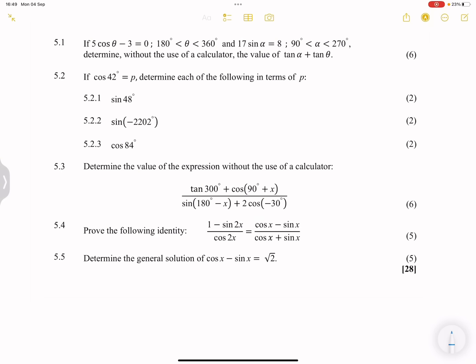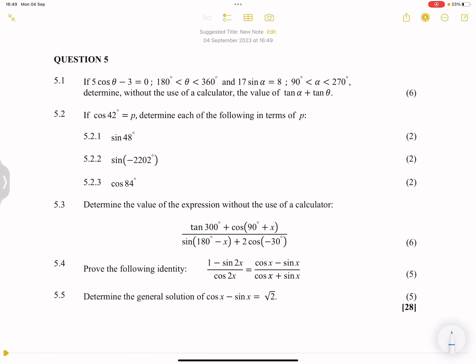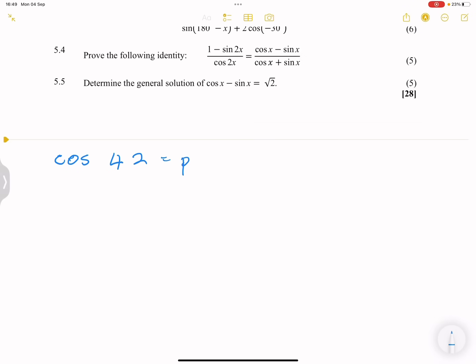We're given if cos of 42 is equal to p. They say determine all of those expressions in terms of p. When you're given an expression in terms of p, we're going to express this in terms of trig ratios as a fraction. That's equal to p over 1. We know that cos is actually x over r, so that means our x value is p and our r value is 1.